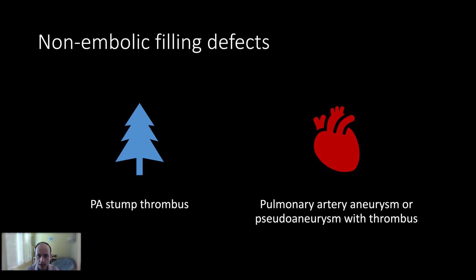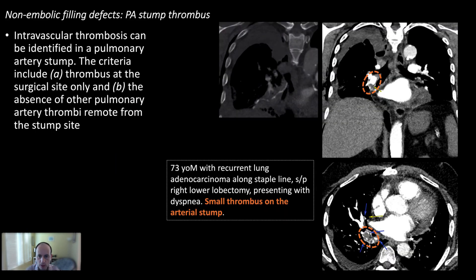In patients who have undergone lobectomies, there will be a stump of the pulmonary artery right above the staple line. A filling defect within this stump — called stump thrombus — is not a pulmonary embolus and does not require anticoagulation.